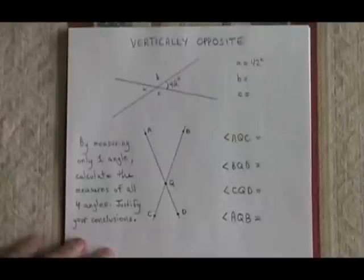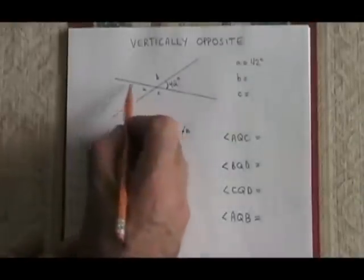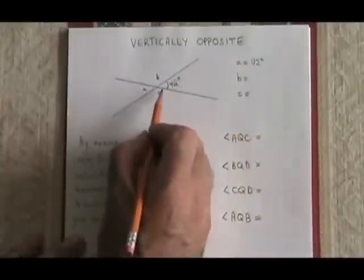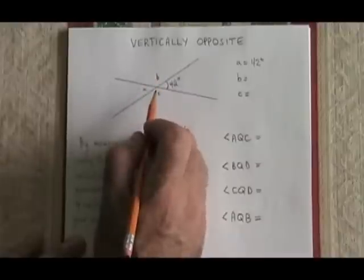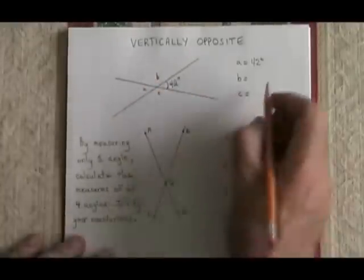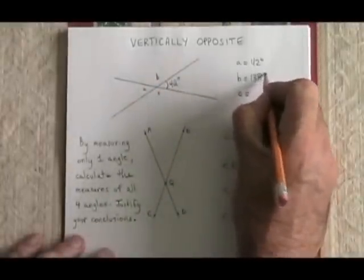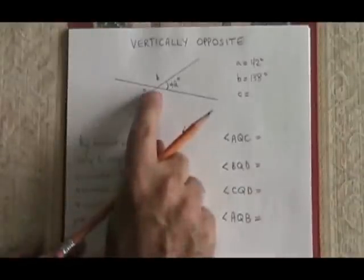Remembering the rule supplementary, this straight line is 180 degree angle. So if we do 180 minus 42, we can calculate the measure of angle B. 180 minus 42 is 138 degrees, so angle B is 138 degrees.